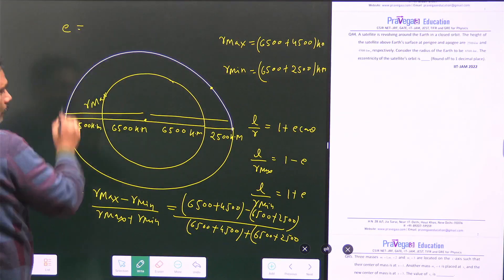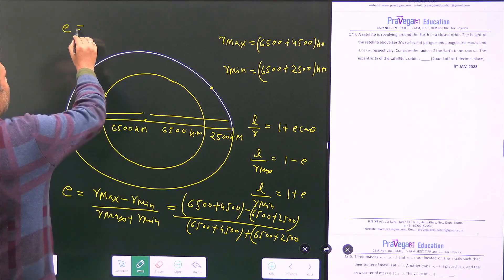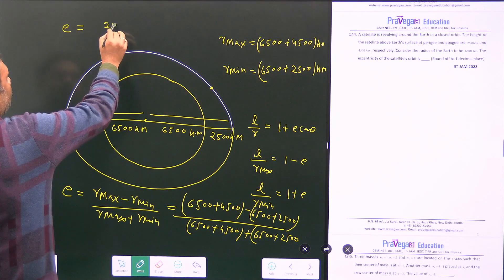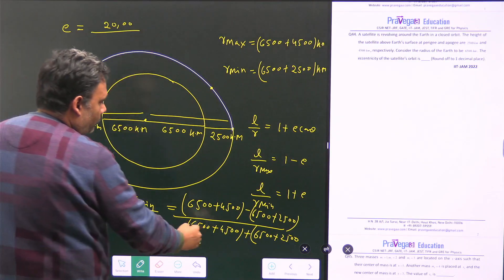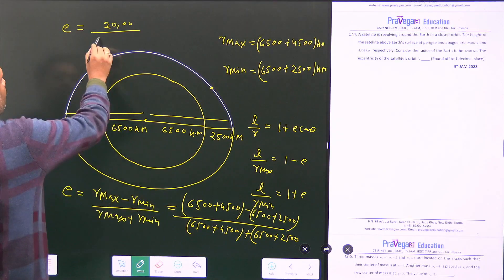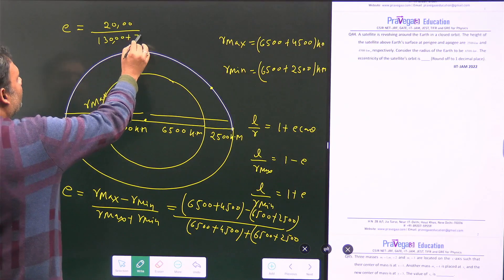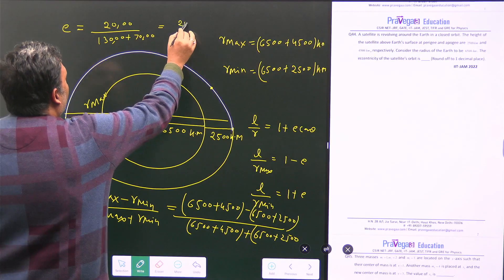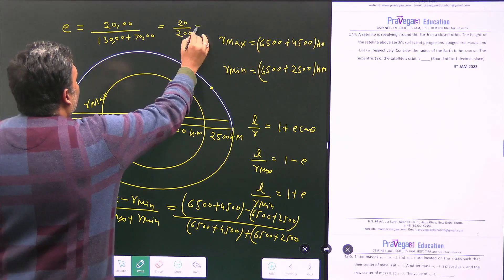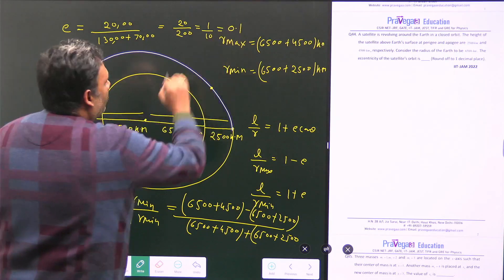then you have e is equal to, the upper 6500 is cancelled out. So this will be something you have 2000 and here you can easily calculate that is 1300, 100 plus 700 plus 700 and that value is equal to 2000 by 20000. That means 1 upon 10, that is 0.1.